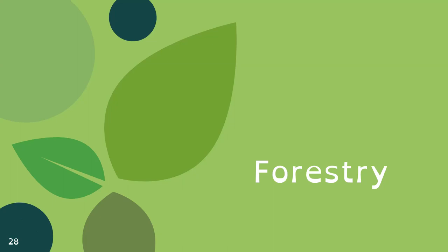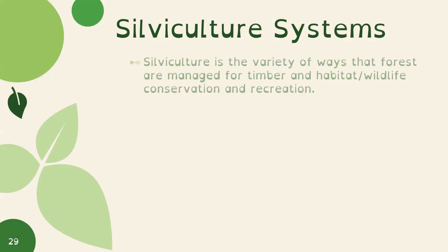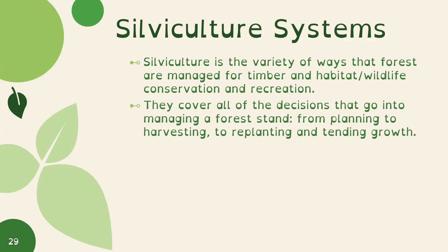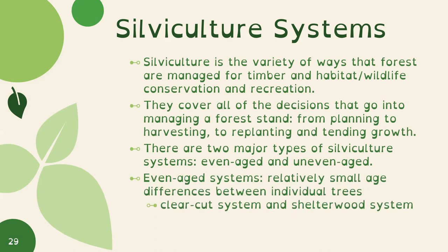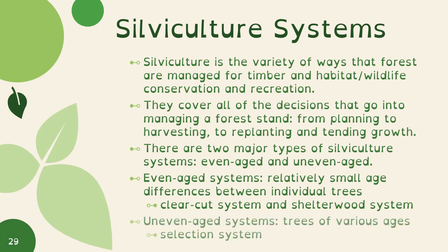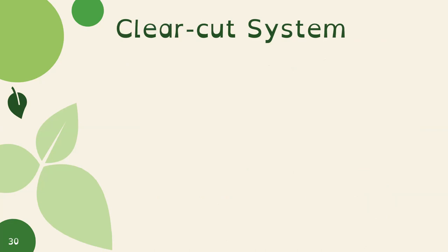Now let's look at forestry. Silvicultural systems are the variety of ways forests are managed for timber, habitat, wildlife conservation, and recreation — covering all decisions from planting to harvesting to replanting. There are two major types: even-aged systems, where there are relatively small age differences between trees (like clear-cut and shelter-wood systems), and uneven-aged systems, where trees are of various ages (the selection system).